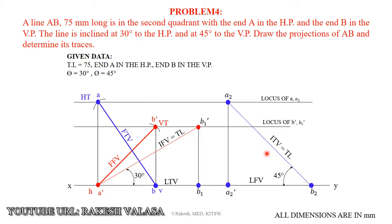I hope this problem is very clear to everyone. One important point: finally, draw thick lines only for the final front view — that is A dash B dash — and the final top view — that is AB. These two lines should be thick; all remaining lines should be thin lines.